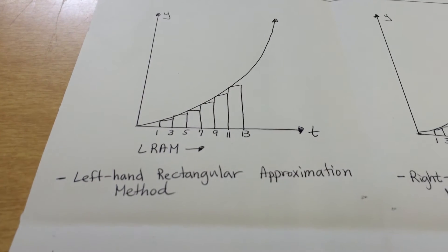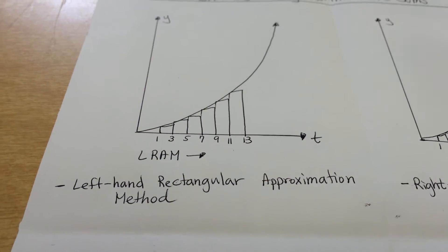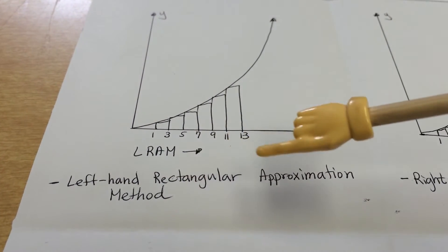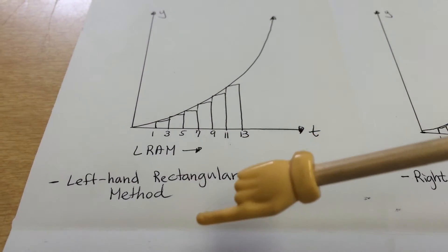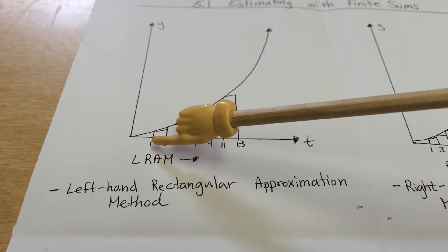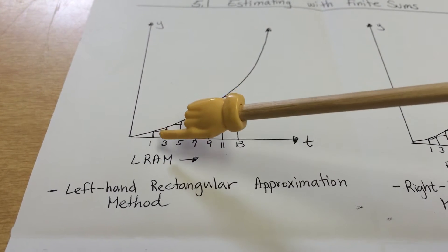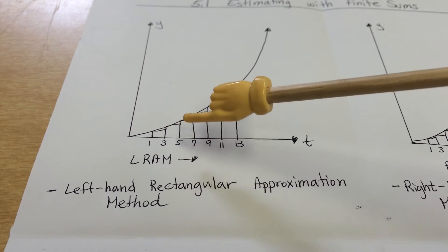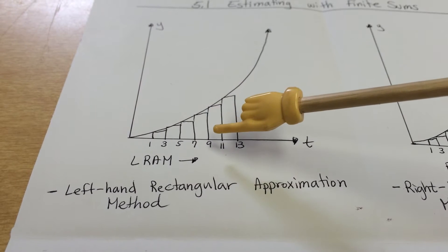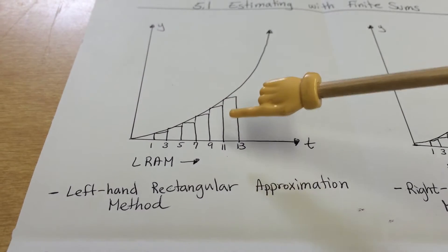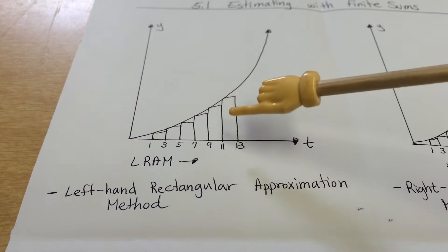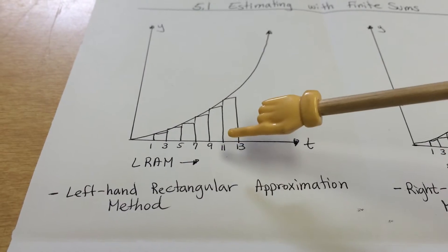This is called the LRAM, which is the short method for Left-hand Rectangular Approximation Method. That means you start from the left side, find the area of every single one of those rectangular parts right there, except for this last part — you do not include this last part.